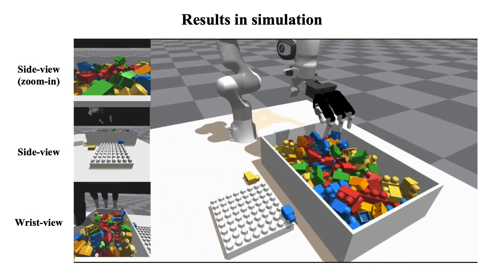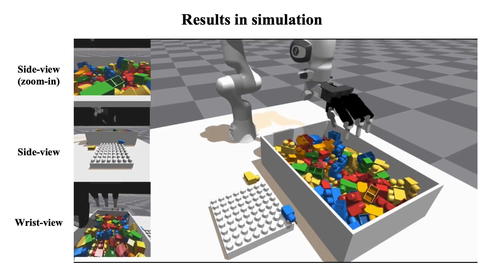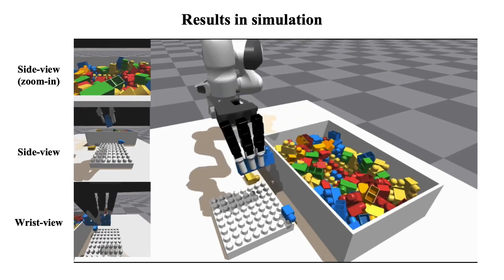After training each sub-policy with bi-directional optimization framework, we can now chain them into a sequence and perform a long horizon structure building task.